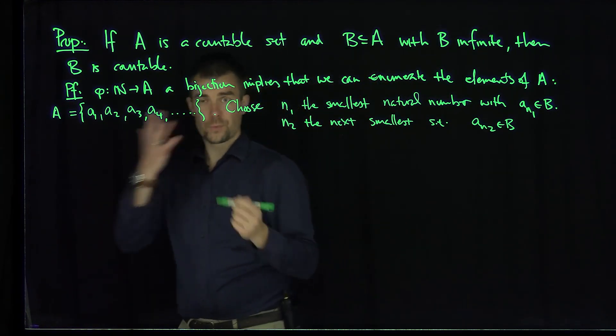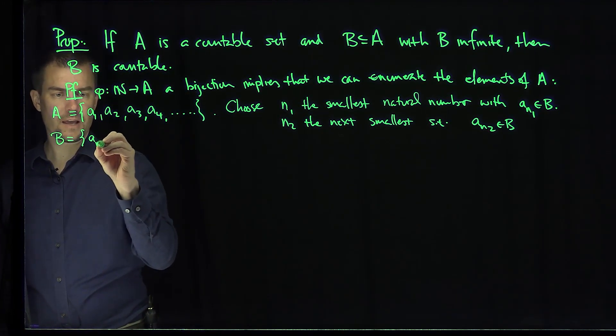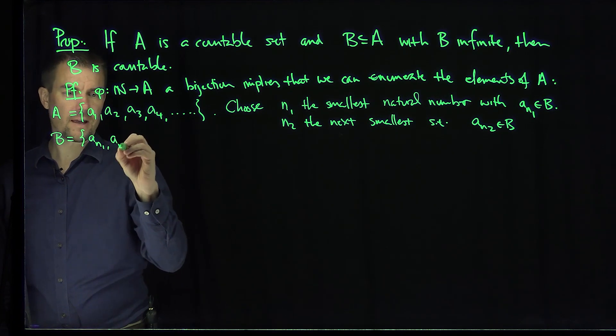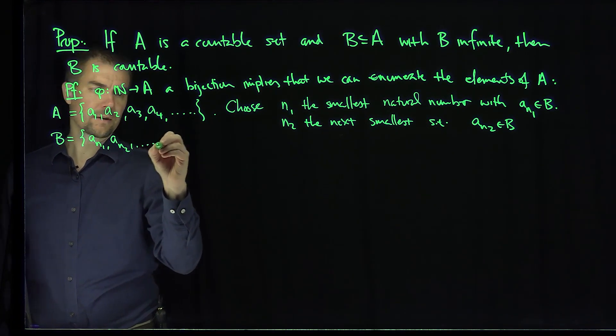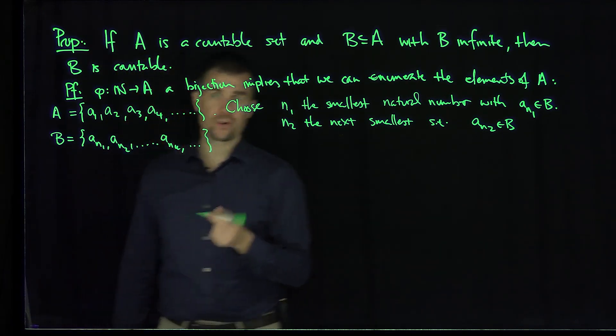And so what we've done here then is we've therefore written by induction, we can write that B is what? Is A_N1, A_N2, etc. A_NK. And that is an enumeration of B.